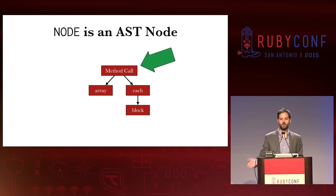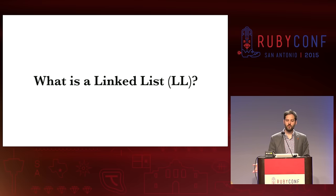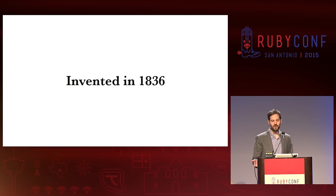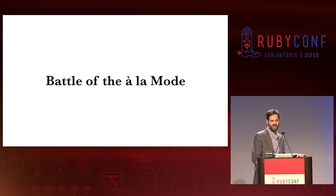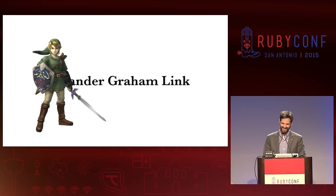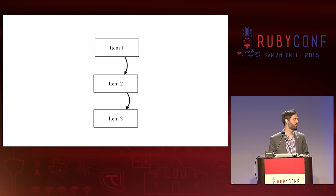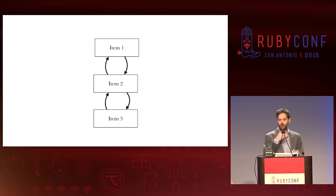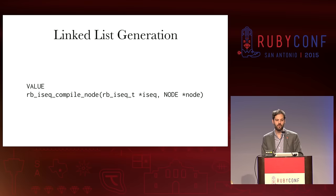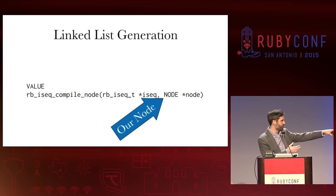The next thing we do is translate that AST into a linked list. What is a linked list? Linked lists were invented in 1836 at the Battle of Alamode by Alexander Graham Link. All it is is just a list of items that are connected by pointers. This is a singly linked list, and actually in our case we're going to be working with doubly linked lists, so they actually link back up. The place where that linked list is generated is inside this function, RBIC_compile_node, and we pass it our node — the AST node we got previously.